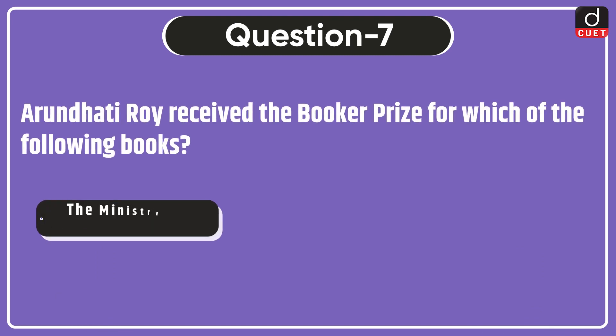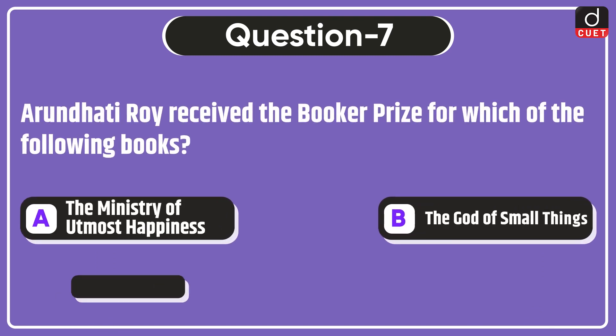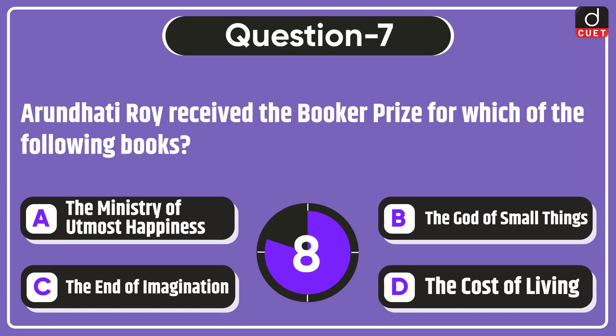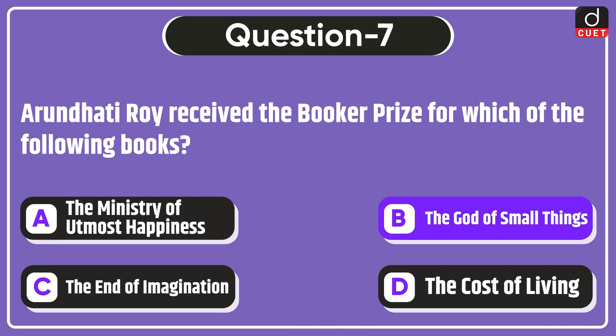Next question: Arundhati Roy received the Booker Prize for which of the following books? The Ministry of Utmost Happiness, The God of Small Things, The End of Imagination, or The Cost of Living? The correct answer is option B — The God of Small Things.